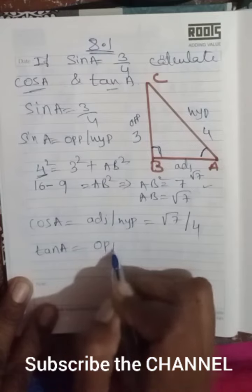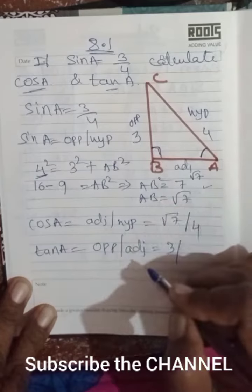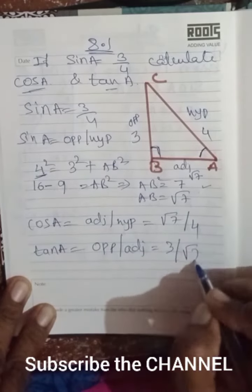Then tan A is very simple: it equals opposite over adjacent. The opposite is 3 and the adjacent is root 7.